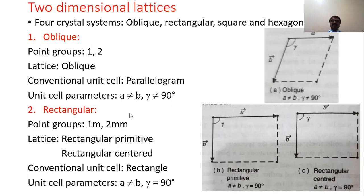The next type is rectangular. In the rectangular lattice system, there are two different types of Bravais lattices possible: rectangular primitive and rectangular centered. In both cases, A is not equal to B, but gamma must be equal to 90 degrees. The conventional unit cell is a rectangle.